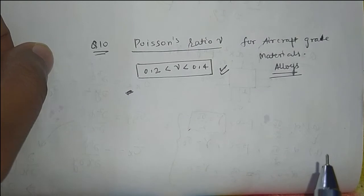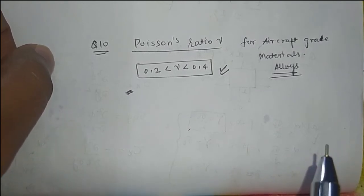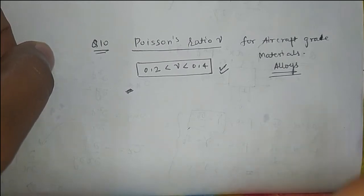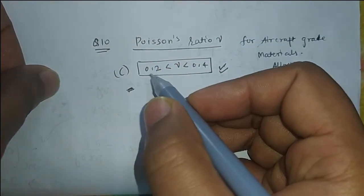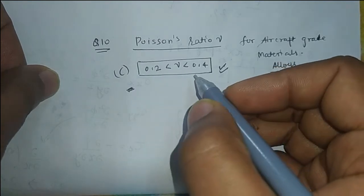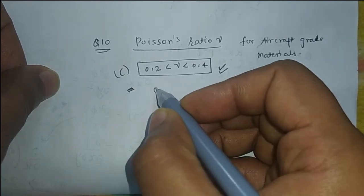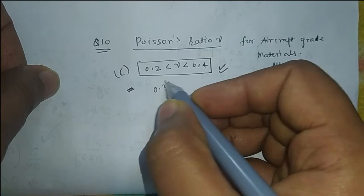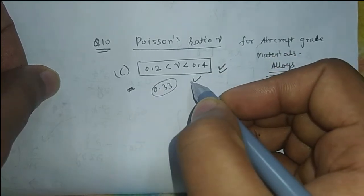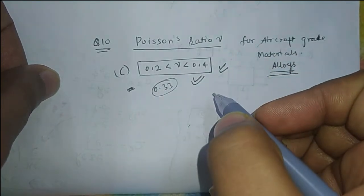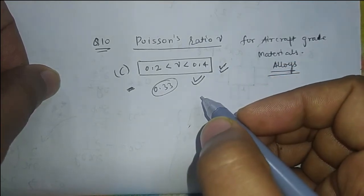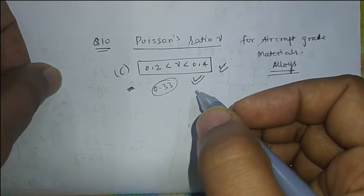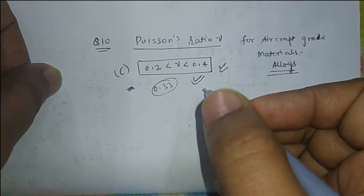Question number 10: The Poisson's ratio of most aircraft-grade metallic alloys. Option C is the correct answer. The Poisson's ratio value lies between 0.2 to 0.4, usually around 0.33. This range is correct; values greater than this range, or values of 0 or negative, are not typically used.